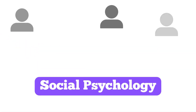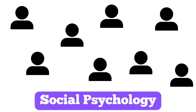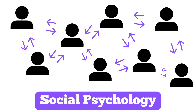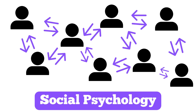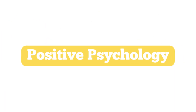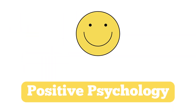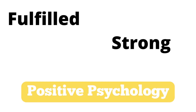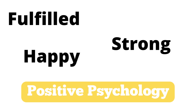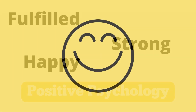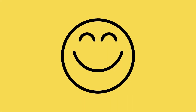Social psychology focuses on society as a whole and how humans influence each other. Positive psychology is the study of how us, as humans, can make our lives better. In this area, we focus on how we are able to feel fulfilled, strong, and happy to ensure a positive life for us all.